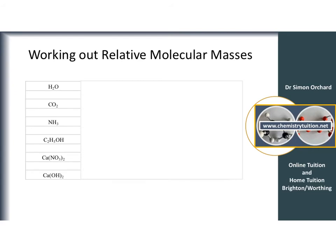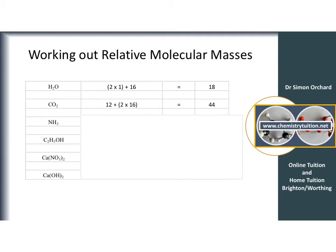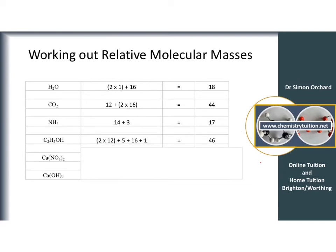Relative atomic mass is easy — just look it up in the periodic table. For molecules, add up the relative atomic masses. Water: hydrogen is 1, oxygen is 16, so 2×1 + 16 = 18. Carbon dioxide: 12 + 2×16 = 44. Ammonia: nitrogen is 14, so 14 + 3×1 = 17. Ethanol (C₂H₅OH): 2×12 + 5×1 + 16 + 1 = 46.